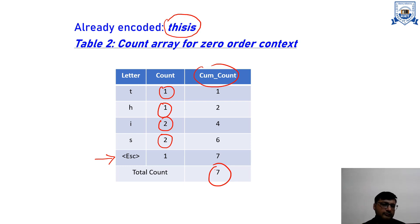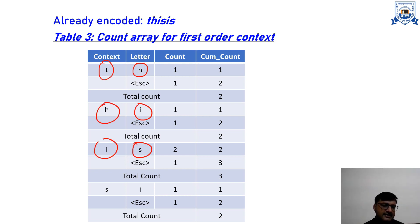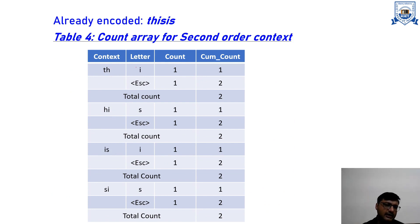Similarly, we create the count array for first order context. The difference is that we look at the previous symbol. For H, the first order context is T; for I, it is H; for S, it is I. I is occurring twice before S, so we take its count as 2. We also create the second order context table. For I, the second order context is TH; for S, it is HI; for I, it is IS — based on whatever was previously encoded.